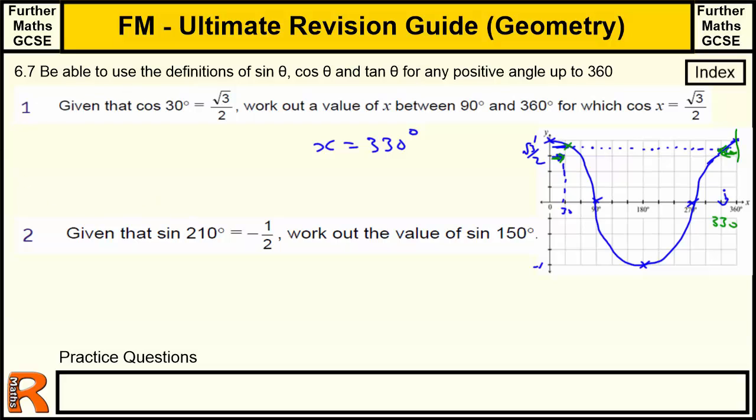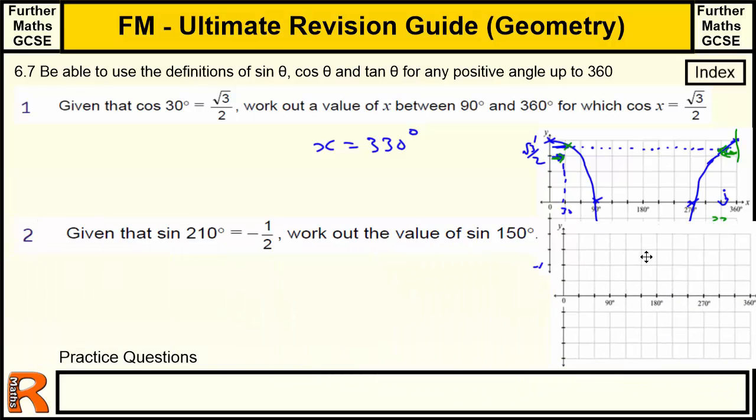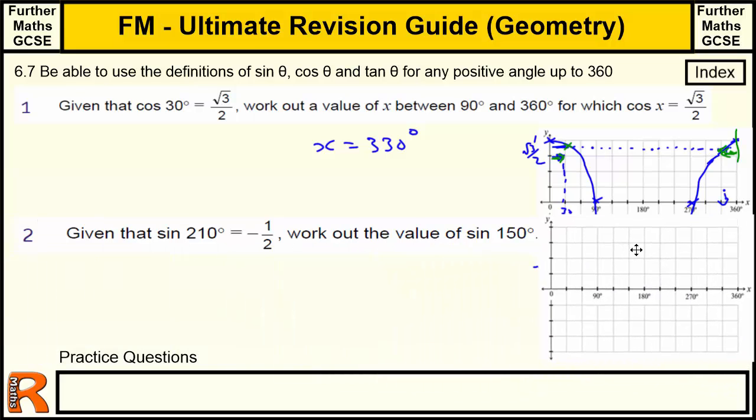So now we've got on with the sine. Now these graphs aren't that easy to draw when you first start, but with a little bit of practice you should get used to doing them. So we're going to draw a sine graph now, and then just plunk it over that cos graph because I need the space. Given that sine 210 is minus a half, work out the value of sine 150.